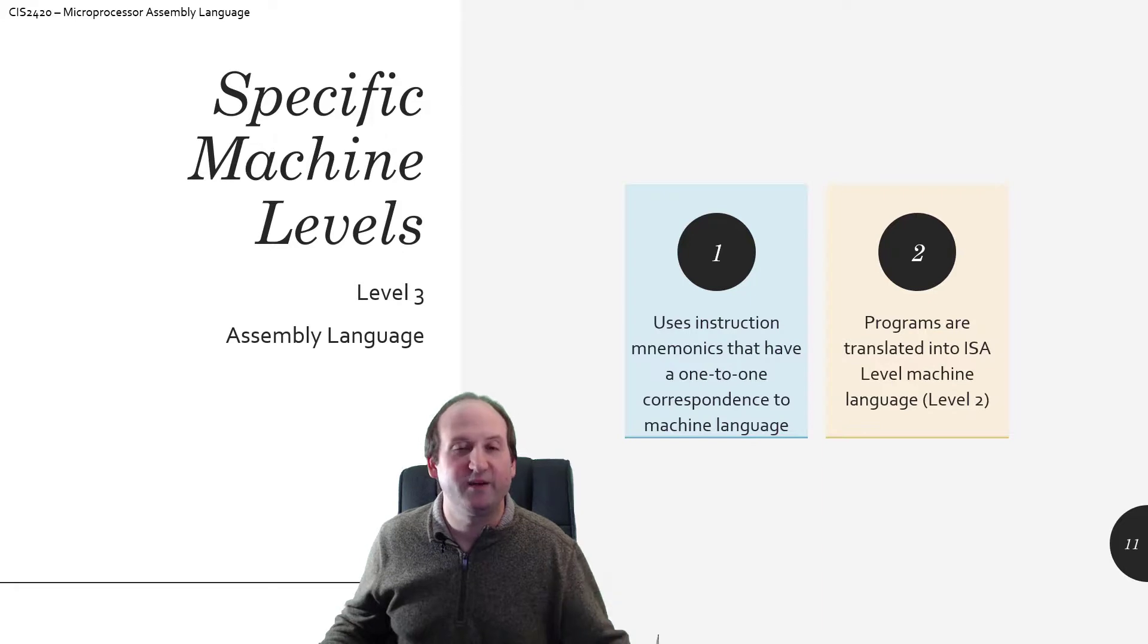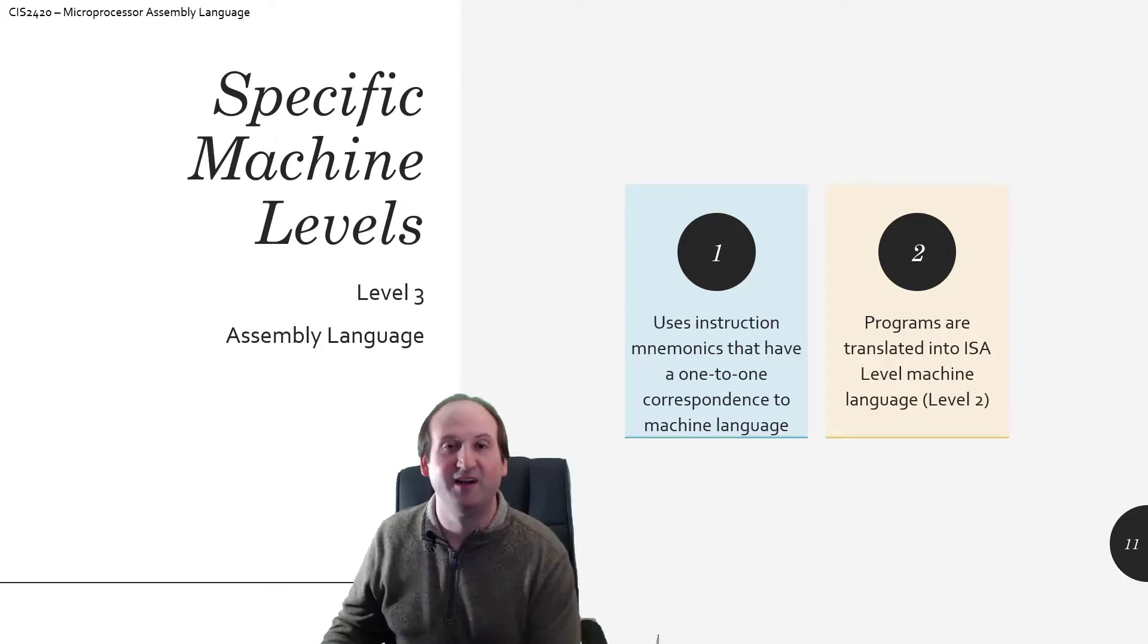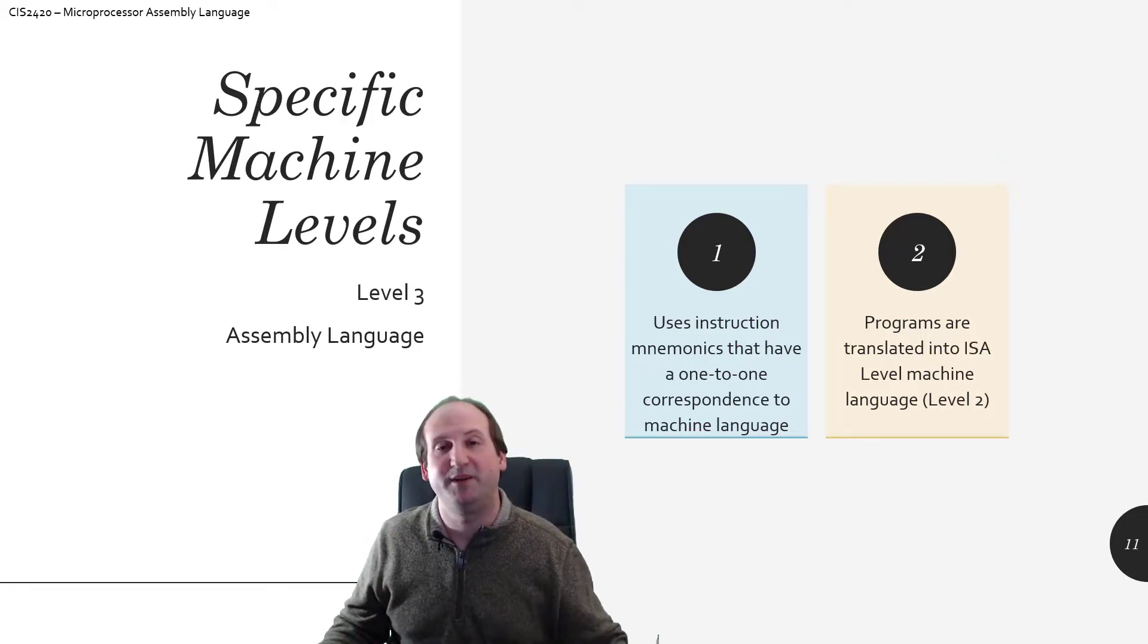Pretty much every high level language gets grouped into that level 4 that we just discussed. So, level 3 is that one step lower. Everything gets compiled down to, well, not necessarily Java, but just a lot of languages get compiled down into level 3 which is that pure assembly language. So as we saw in that slide, the flowchart slide, that mnemonics are used to indicate which operation is being performed.